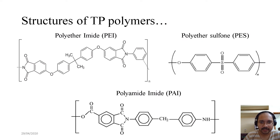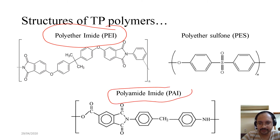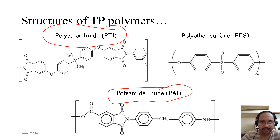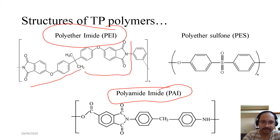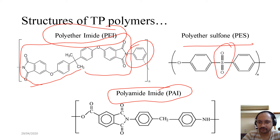Other thermoplastic polymers include polyether imide (PEI) — do not confuse with PAI, which is polyamide imide. Polyether imide is essentially a mirror image structure with an additional benzyl ring. We also have PS (polysulfones) and polyamide imide.